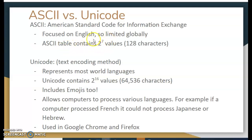The ASCII code contains 2 to the 7th values — which is 128 characters, because it starts at 2 to the 0. Now, what we're going to talk about today is something called Unicode. This is another text encoding method that is basically used globally, representing most world languages. Unicode actually contains 2 to the 16th values, which is 64,536 characters. Unicode uses text encoding and can also include emojis.